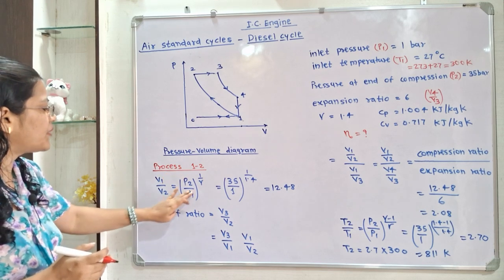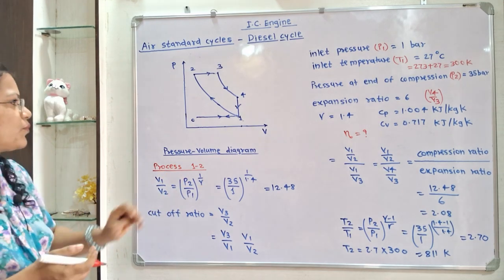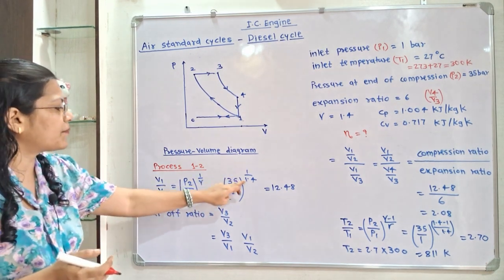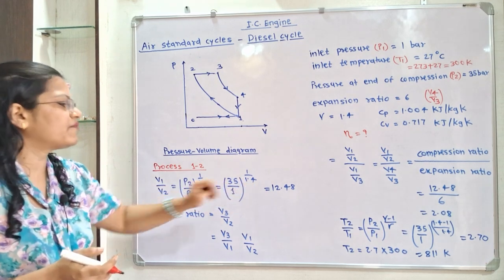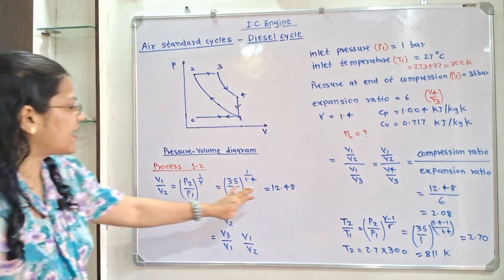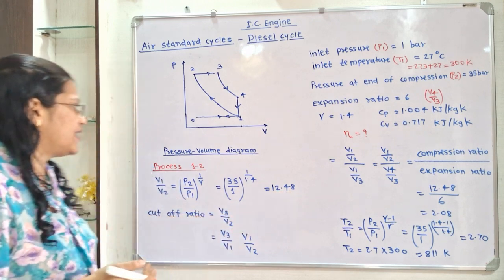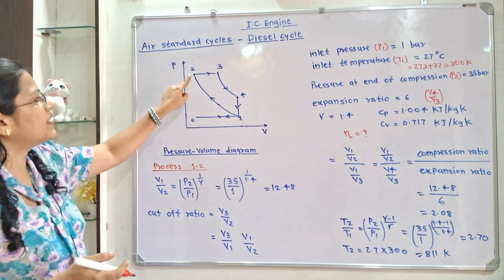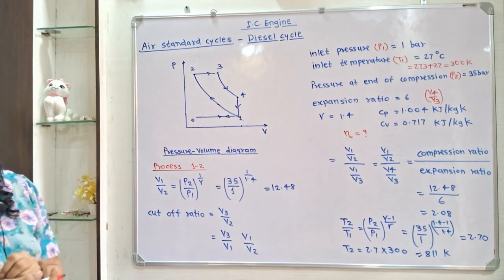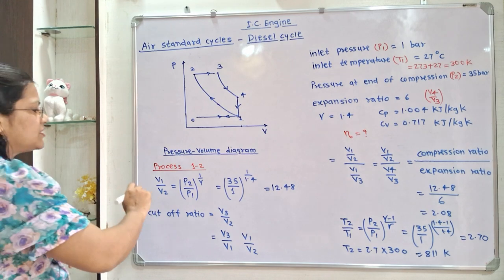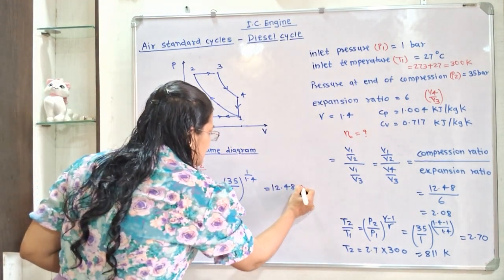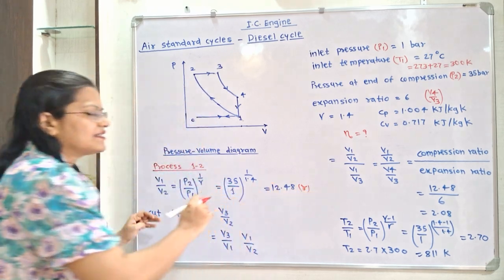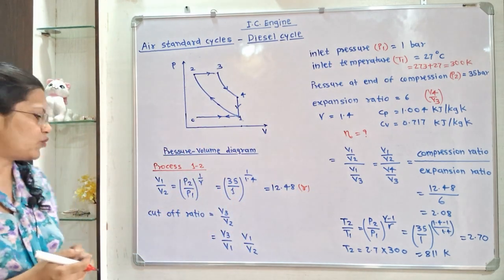For process 1 to 2, we have the relation between volume and pressure: V1 by V2 is equal to P2 by P1 raised to the power 1 by gamma. So, 35 by 1 raised to 1 divided by 1.4 gives 12.48. V1 by V2 is known as the compression ratio, so we can say that R equals 12.48.